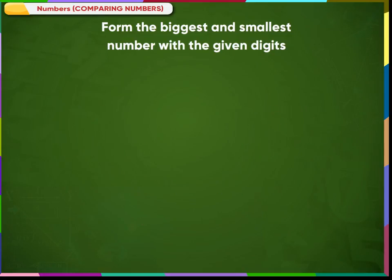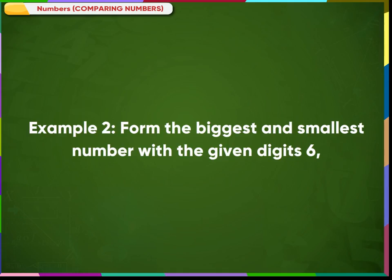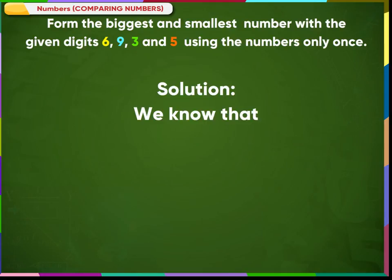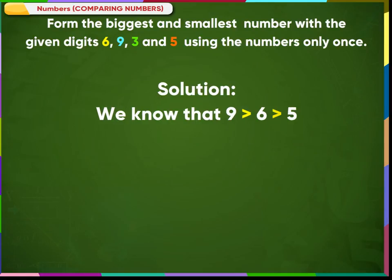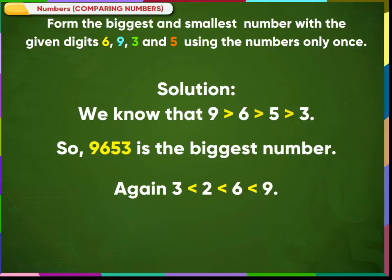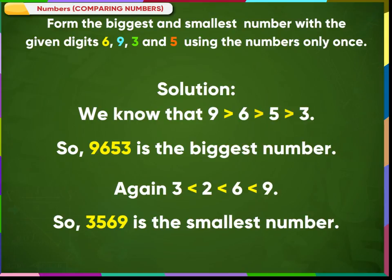Example 2: Form the biggest and smallest number with the digits 6, 9, 3, and 5, using the numbers only once. We know that 9 is greater than 6, which is greater than 5, which is greater than 3. So, 9653 is the biggest number. Again, 3 is less than 5, which is less than 6, which is less than 9. So, 3569 is the smallest number.